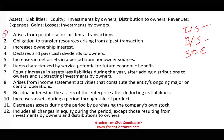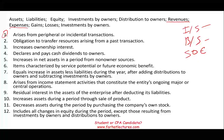Starting with number one: something that arises from peripheral or incidental transactions. Peripheral or incidental means transactions we don't carry on a regular basis — they happen every once in a while and are not part of our central ongoing operation. Would you say that's revenues or expenses? No — revenues and expenses are always part of central ongoing operations. Gains and losses fit this definition.